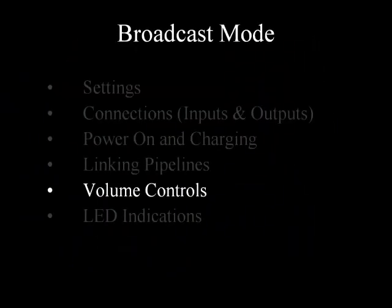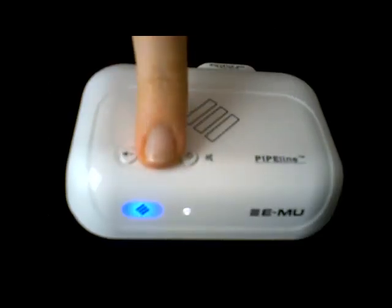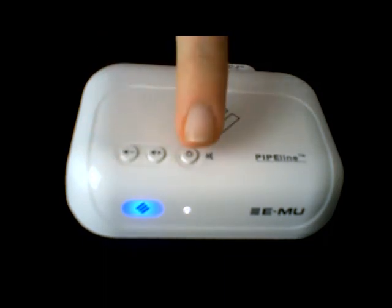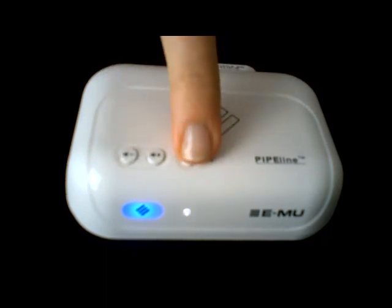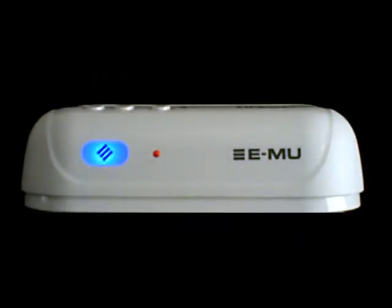On the front of the pipeline you will find the volume controls. On the receiving units, the volume buttons work as an up and down volume control. You can also use the mute button to mute the output. When you mute one of the receiver's outputs in digital mode, that pipeline will not transmit SPDIF sync. When you mute the output in analogue mode, you will see the red LED flashing on the front panel to show the pipeline is muted.